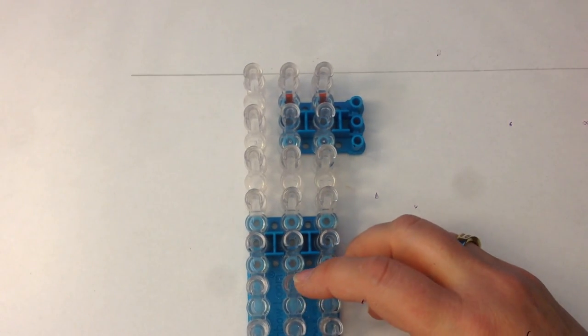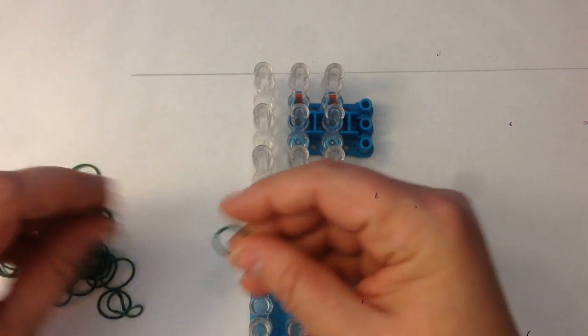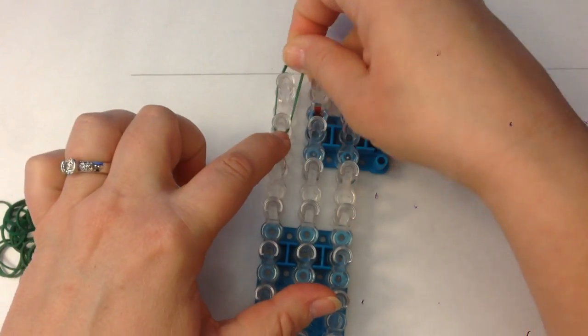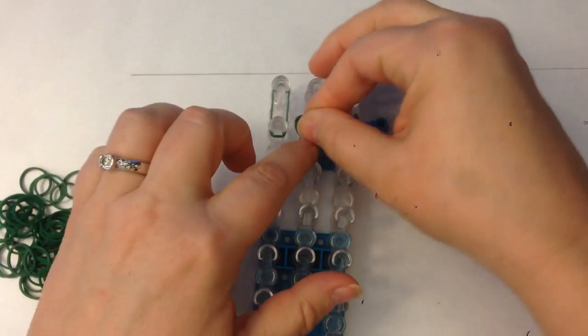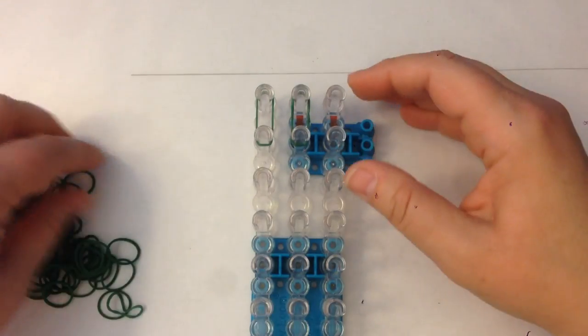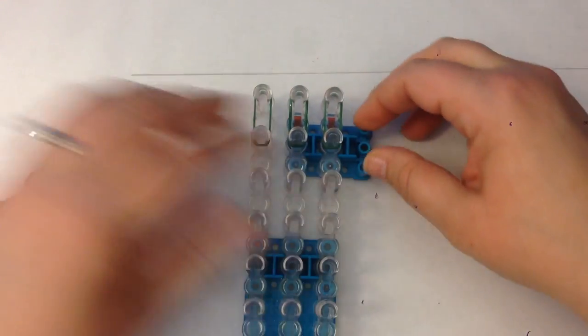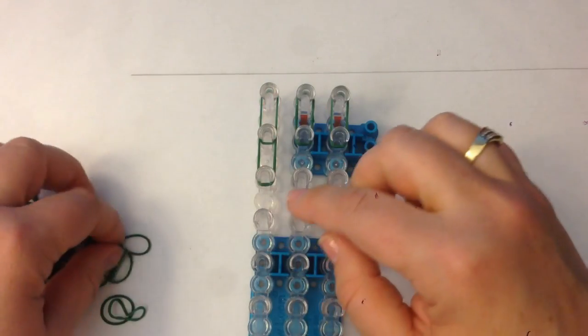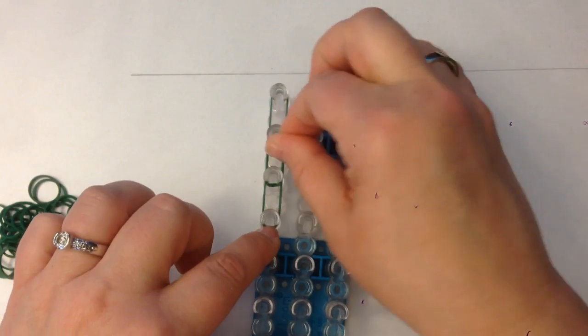Okay, so we're going to start with our double banding. Double banding is you take two bands and you place them over the pegs as if they were one, so you place them together. And this is going to be a smaller ball or sphere. It's only going to take six columns and we're only going to go down three.